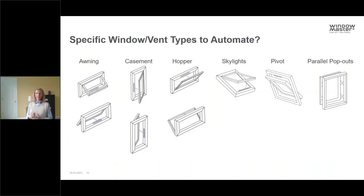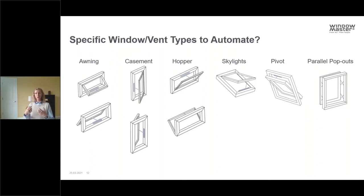The various window and vent configurations we typically have solutions for include: traditional awning style, casement or side-hung, hopper, skylight, pivot, and parallel pop-out windows where scissor hinges bear the weight and actuators are placed horizontally, vertically, or both. These are the most commonly used applications, though some other sophisticated designs can also be applied.